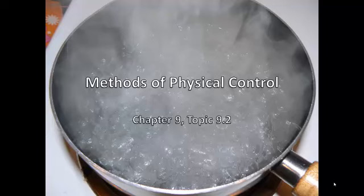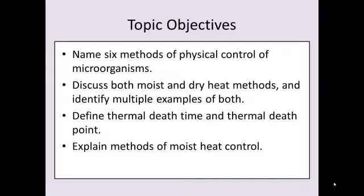Chapter 9, Topic 9.2, Methods of Physical Control. The topic objectives are: name six methods of physical control of microorganisms, discuss both moist and dry heat methods, and identify multiple examples of both.